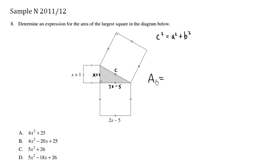So the area of what we're trying to solve equals a squared plus b squared. So this happens to be x plus 1 squared plus my other length, which is 2x minus 5 squared.